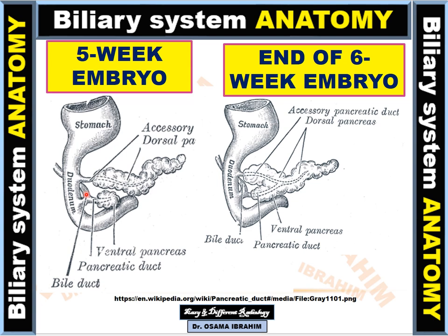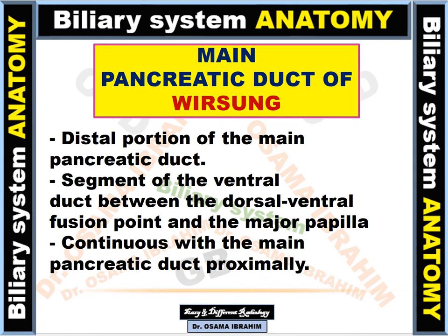At the end of six weeks of embryonic development, there are rotations of the ventral pancreas with the duodenum. The ventral duct then fuses with the dorsal duct of the pancreas to become the main pancreatic duct. The accessory pancreatic duct becomes rudimentary or small and opens only at the minor papilla. The duct of Wirsung is the distal portion of the main pancreatic duct — specifically the segment of the ventral duct between the dorsal-ventral fusion point and the major papilla — continuous with the main pancreatic duct proximally.